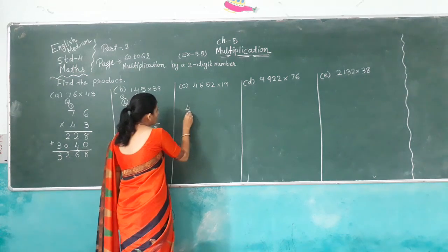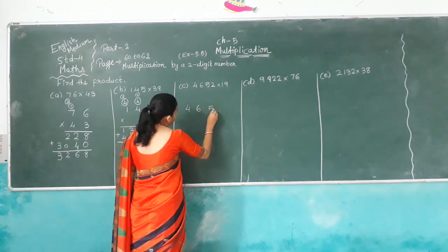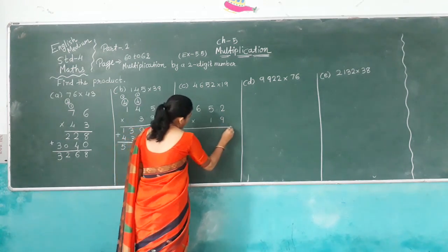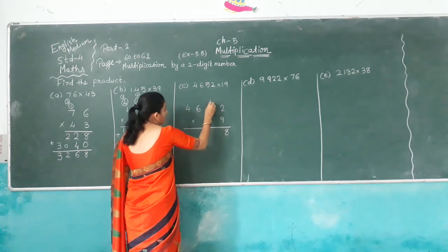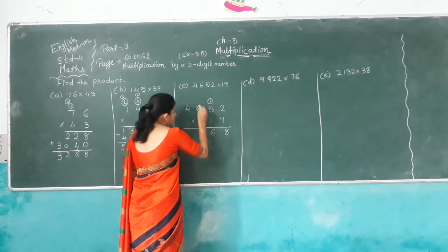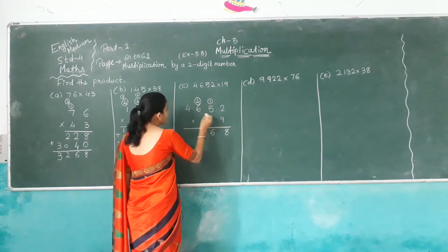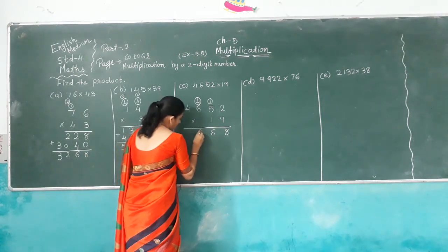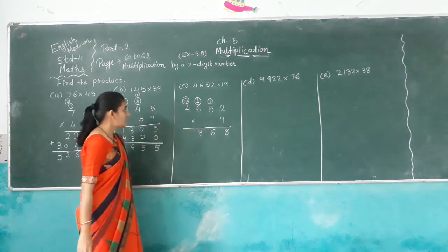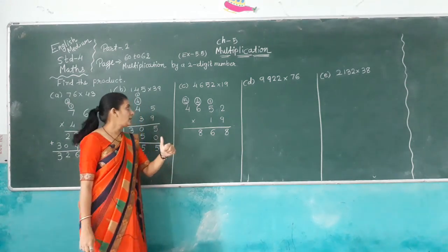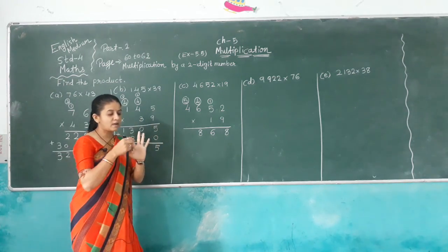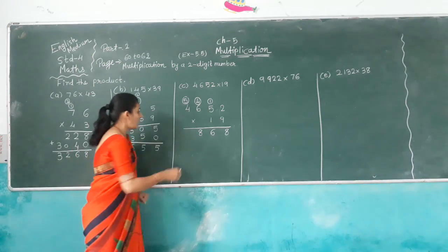Next one: 652 multiplied by 19. 9 times 2 is 18, carry over 1. 9 times 5 is 45, plus 1 is 46, carry over 4. 9 times 6 is 54, plus 4 is 58, carry over 5. 9 times 6 is 54, 54 plus 5: take 5 fingers — 36, 37, 38, 39, 40, 41.